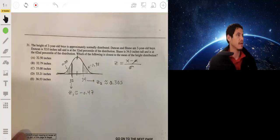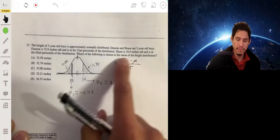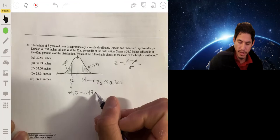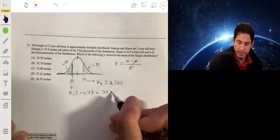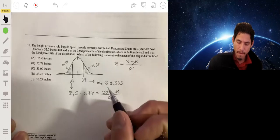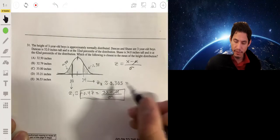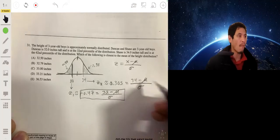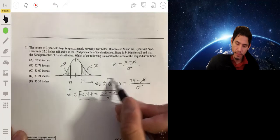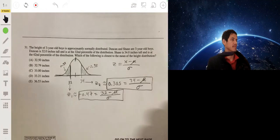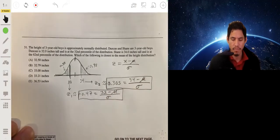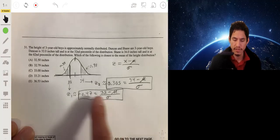Okay, so now we have two equations. For Duncan's, we're going to have that this is going to equal to 32 minus mu over the standard deviation. So we're going to have negative 0.47 is equal to 32 minus mu over sigma. And then for Shane, we're going to have this is equal to 34 minus mu over sigma. So now we have two equations and two variables, so we just have a system of equations. So this just becomes an algebraic problem.